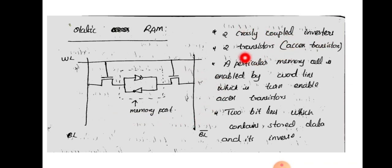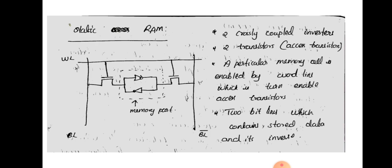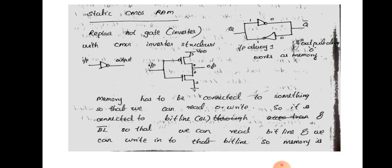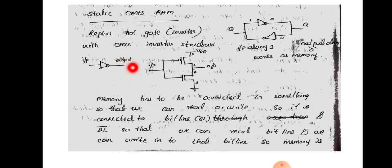The cell has two cross-coupled inverters and two access transistors. A particular memory cell is enabled by the word line, which in turn enables the access transistors, and there are two bit lines containing stored data and its inverse. Each inverter is replaced with a CMOS structure — containing a PMOS and an NMOS — and these two inverters are connected back to back. Input is taken at one end and output is taken across the other.